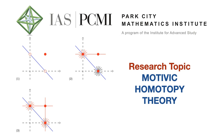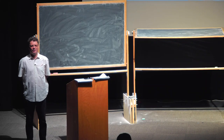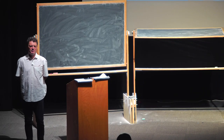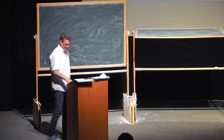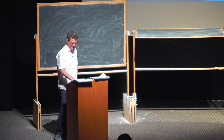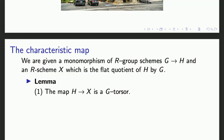Workshop talk on torsors over affine curves. So I'm continuing a bit the general theory started yesterday, and then I'll switch to the board to go to the Dedekind rings and curves. Yesterday we were talking about the characteristic maps.